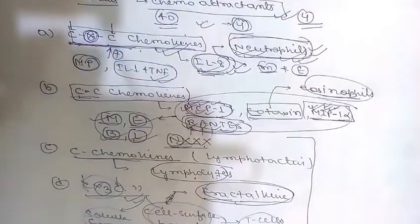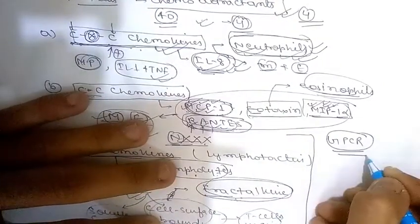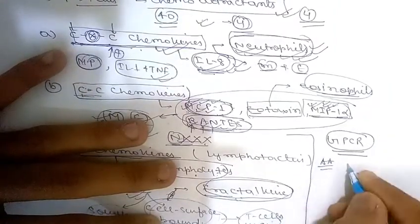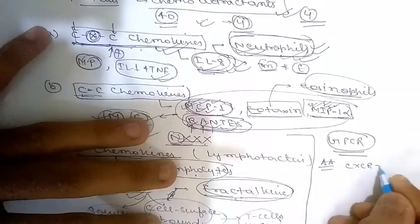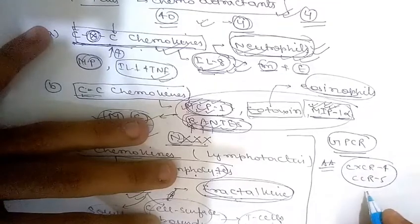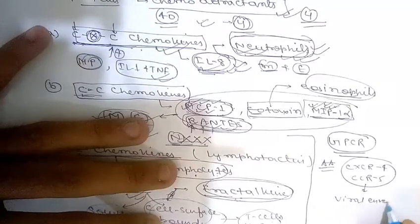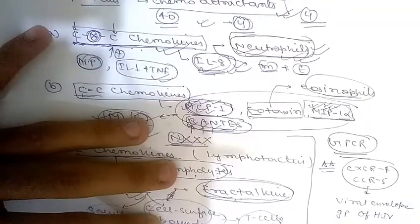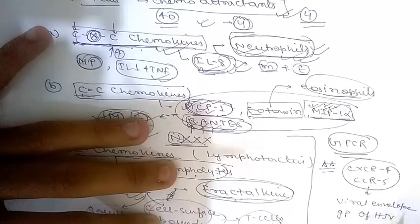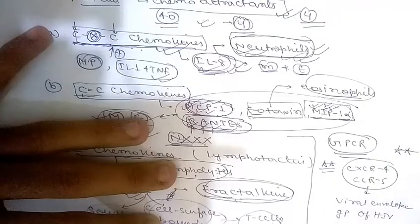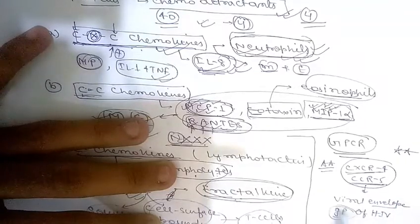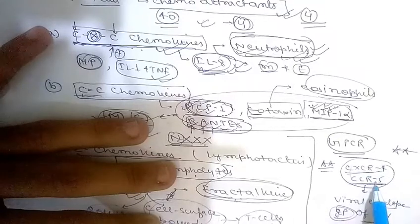Chemokines mediate their activities by binding to G protein-coupled receptors (GPCRs), also called CXCR, CCR, etc. Importantly, certain chemokine receptors such as CXCR4 and CCR5 act as co-receptors for the viral envelope glycoprotein of HIV, the cause of AIDS, and are involved in the binding and entry of this virus into cells.